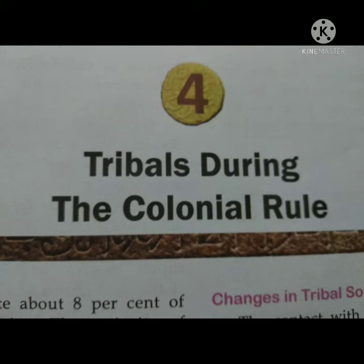Third one — who led the Ulgulan? Answer: Birsa Munda. Fourth one — which of the following pairs is incorrect? Answer: Munda Rebellion 1855-1875. Fifth one — in which state was Birsa Munda born? Answer: Jharkhand.